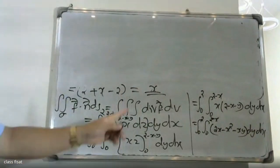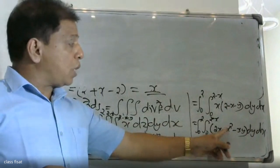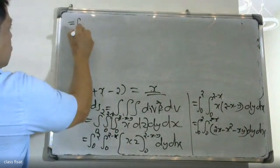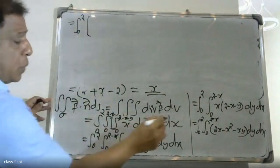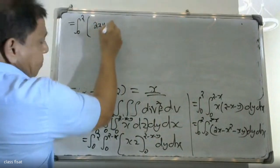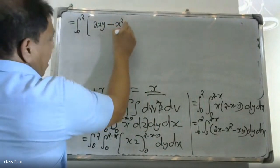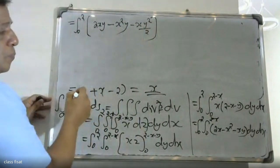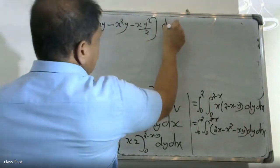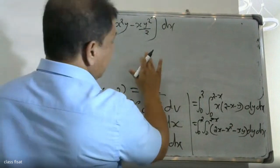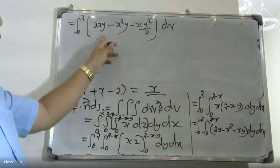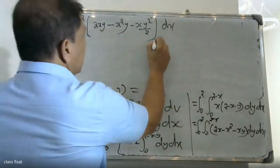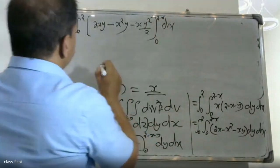Expanding the bracket: x times 2 gives 2x, x times (-x) gives -x², x times y gives -xy. Integrating with respect to y: 2x·y, x²·y, and xy²/2. Applying the limits from 0 to (2 - x), we substitute y equals (2 - x).